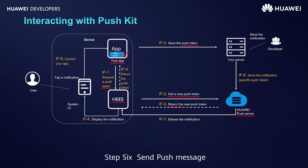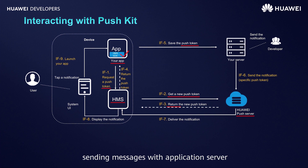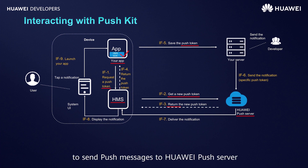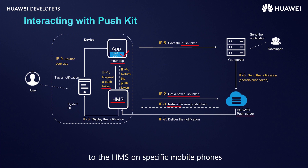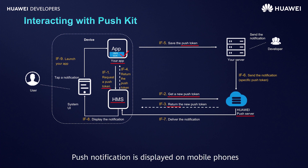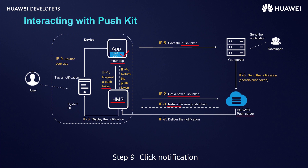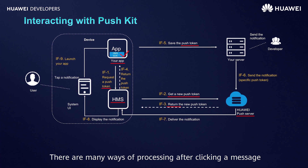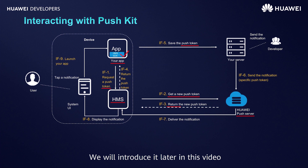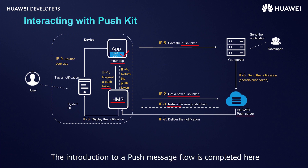Step 6: Send Push Message — the application server uses Push Token to send push messages to Huawei Push Server. Step 7: After receiving messages, Huawei Push Server distributes messages to the HMS on specific mobile phones. Step 8: Display Notification Message — in HMS, push notification is displayed on mobile phones by the same message sender. Step 9: Click Notification — users click the notification to start the application. There are many ways of processing after clicking a message, which will be introduced later in this video.